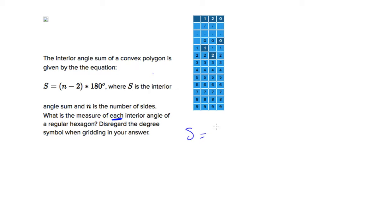To use this formula, we're going to say it's 6 minus 2 times 180, and 4 times 180 equals 720 degrees. Be careful, that's not what they're asking for. That's the total interior angle sum of a hexagon.